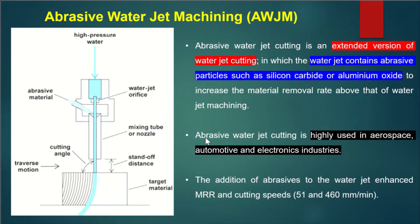Abrasive Water Jet Machining uses the power of water. In water jet machining, they mix particles called abrasive particles — it is actually an extended version of water jet. The water jet contains abrasive particles, which are hard, regularly shaped particles having sharp corners. Along with water, they add abrasive particles so that it forms an abrasive water jet slurry.